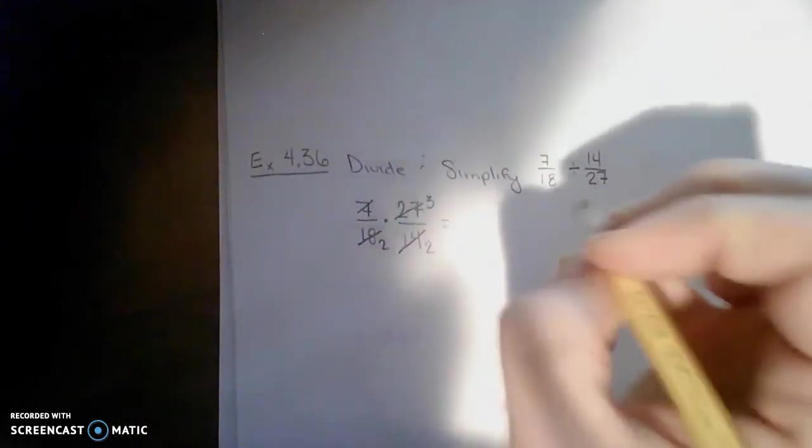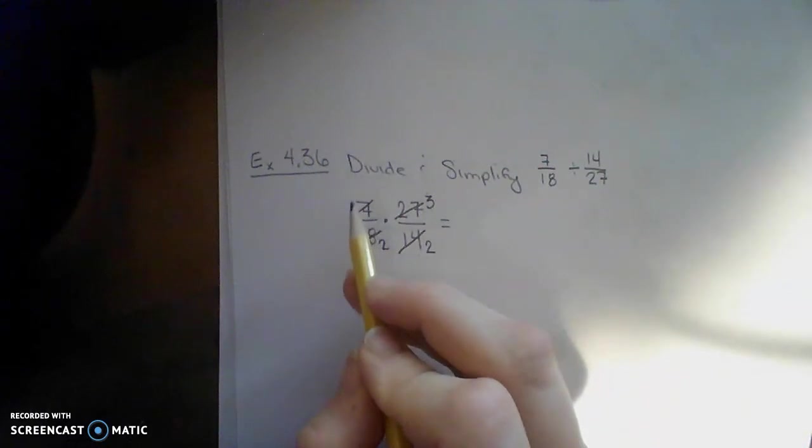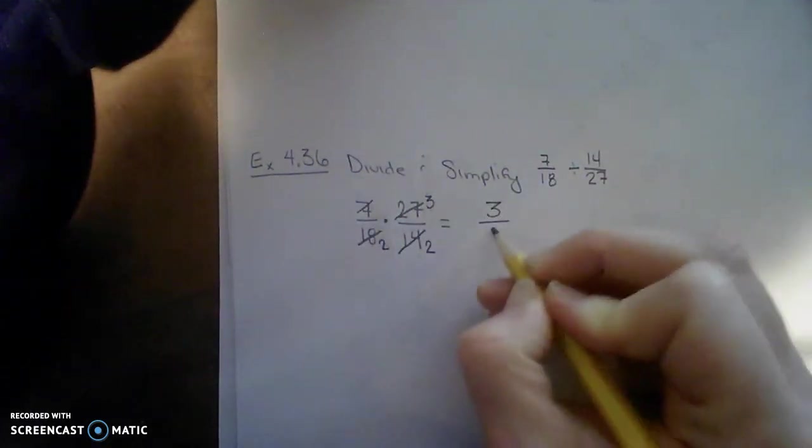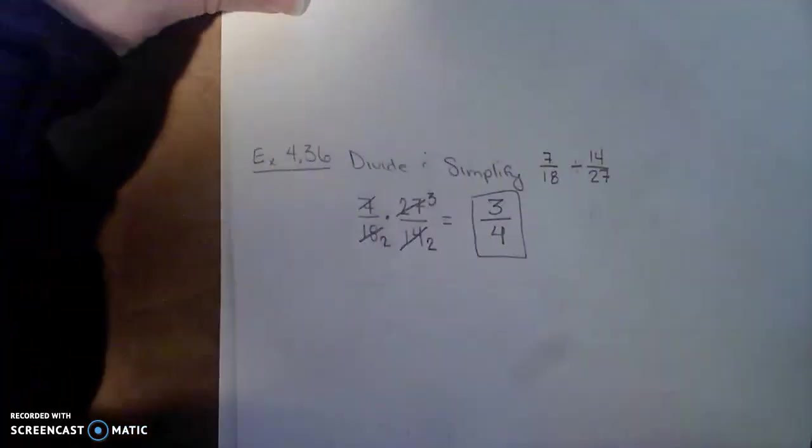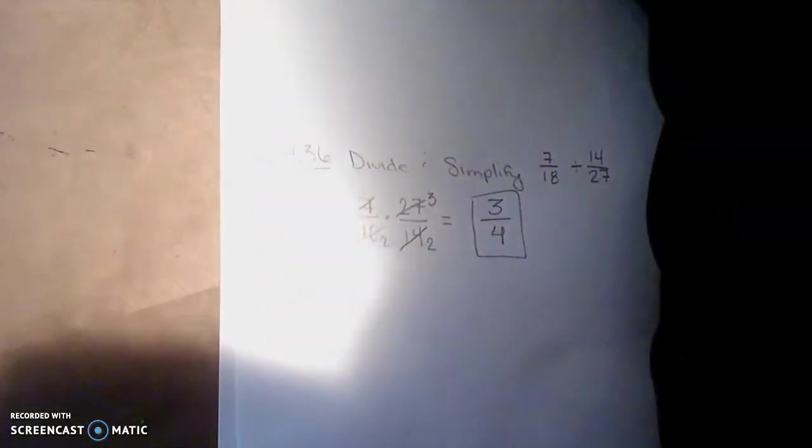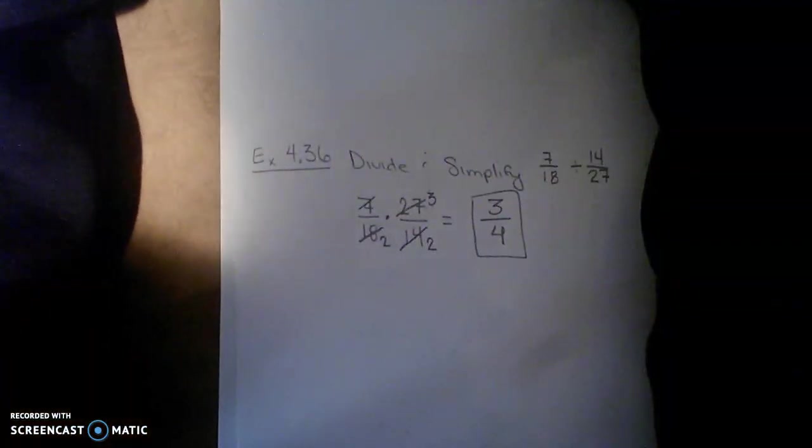All right, so let's go ahead and multiply all the factors that are left. There's nothing here, right? So there's an understood 1. 1 times 3 is 3. 2 times 2 is 4. 3 fourths. Great. All right, go ahead and do your homework, the division problems. And let us know if you have any questions.